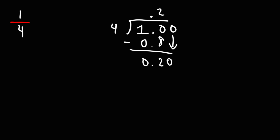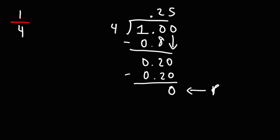Now how many times does 4 go into 20? 4 goes into 20 5 times. 4 times 5 is 20, so 4 times 0.05 is 0.20. And when we subtract them, we get a remainder of 0. As soon as we get a remainder of 0, the quotient gives us the answer.